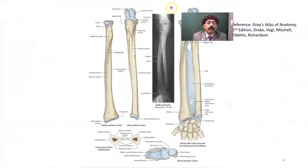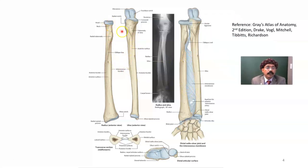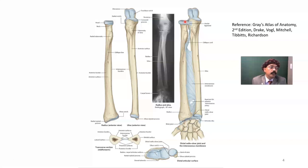The radius forms multiple joints: the superior radioulnar joint and inferior radioulnar joint, which are pivot-type synovial joints. The radius also articulates with the capitulum of the humerus as part of the elbow joint, which is a hinge-type synovial joint. The joint between the radius and ulna through the interosseous membrane is a fibrous joint called a syndesmosis, with an aperture for the anterior interosseous artery.